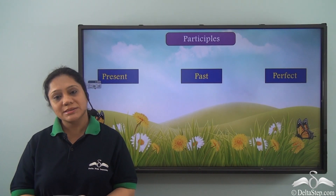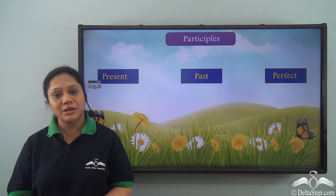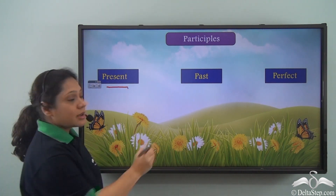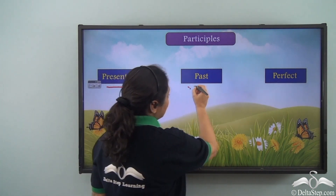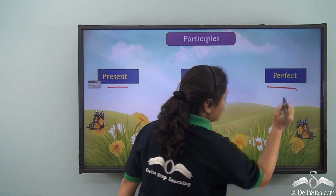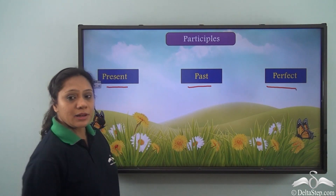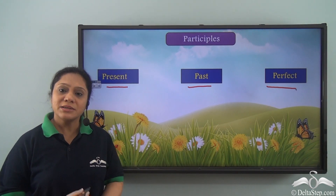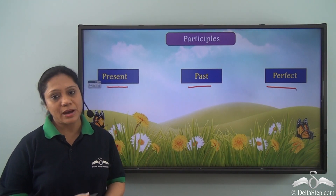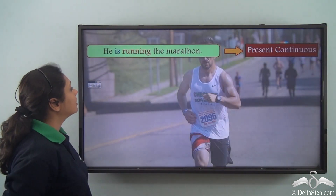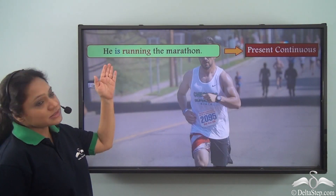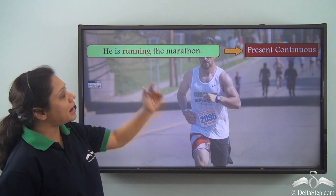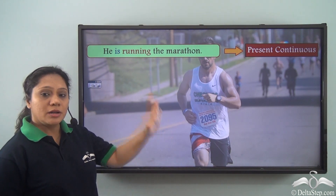We know that participles are of three kinds: the present participle, the past participle, and the perfect participle. Today we will learn about the characteristics of participles.